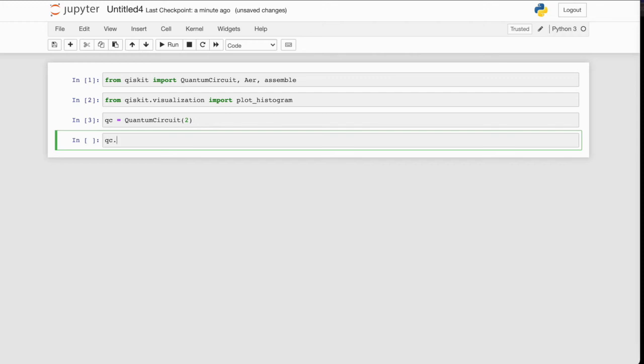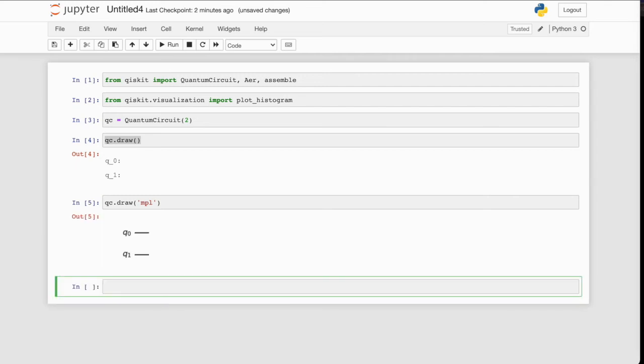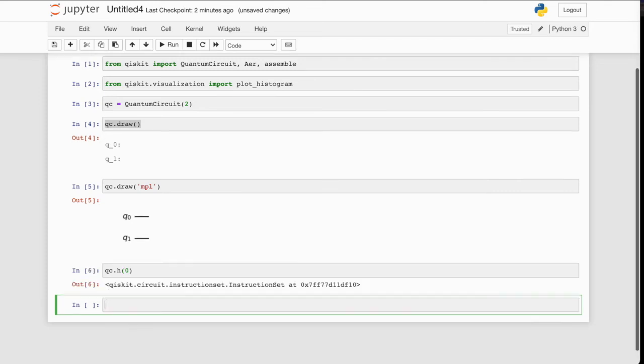We can now use the draw function to see what our quantum circuit looks like at any point, so we can see the progress as we're building this. So let's just do qc.draw and see what this circuit looks like. You can see there it's simply composed of a qubit 0 and a qubit 1 at the moment. We can make that output a little prettier by specifying that we want to use matplotlib to output our quantum circuit. Let's do that now. Okay, the next step, we need to apply the Hadamard gate to qubit 0. So let's do that now. So qc, call the h function, and we want to apply that to qubit 0. So we specify 0 in the function call.